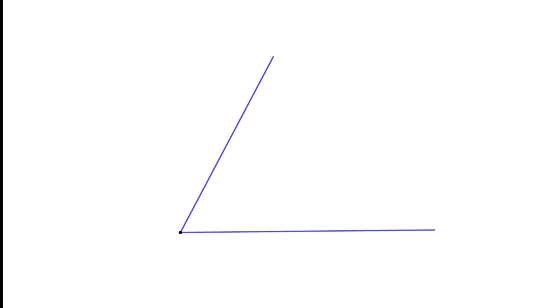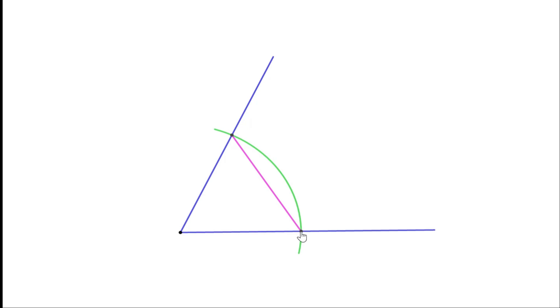Let us see how we can do that. First, draw an angle. To draw its bisector, we need to make an isosceles triangle with the two sides equal. Put the compass at the vertex and draw an arc — you can take any radius. Mark the points of intersection of this arc with the sides of the angle. Joining these points gives an isosceles triangle, since both distances are radii of the same arc and are therefore equal. To draw the bisector of this angle, it is enough to draw the perpendicular bisector of this base line.